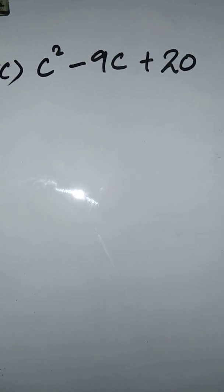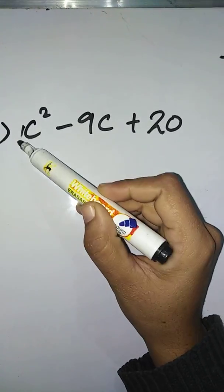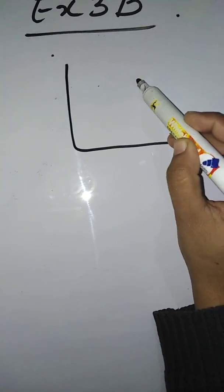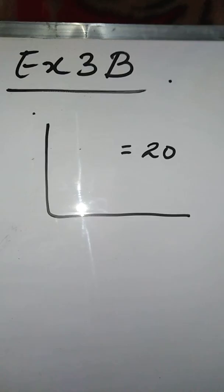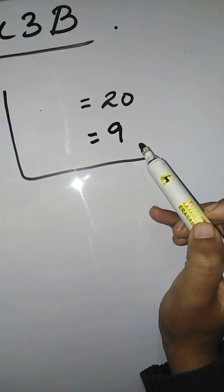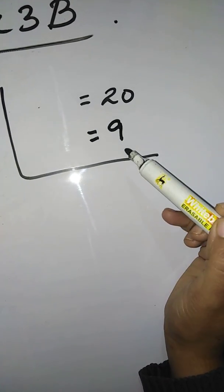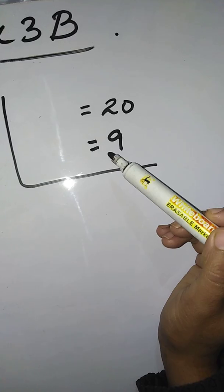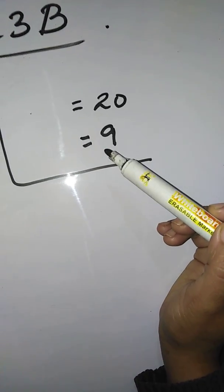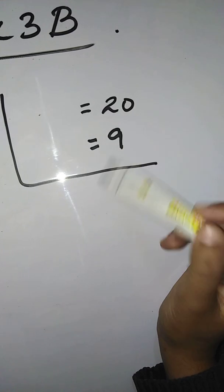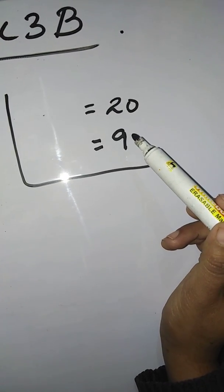Now Part (c): c² - 9c + 20. Multiply the first and last number — coefficient is 1, so 1 × 20 = 20. The middle term is 9. Find two factors that when multiplied give 20 and when added or subtracted give 9. Try 10 × 2 = 20, but 10 + 2 = 12 and 10 - 2 = 8 — neither gives 9.